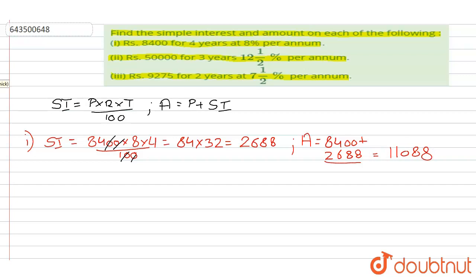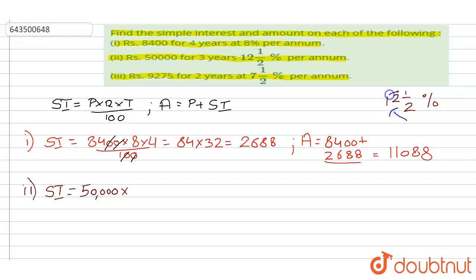Now we come to the second part, in which simple interest will be 50000 into rate of interest 12 and a half percent. We convert this to an improper fraction: 12 into 2 is 24, plus 1 gives 25 by 2, multiplied by time 3 years, divided by hundred. We can cancel out the zeros.